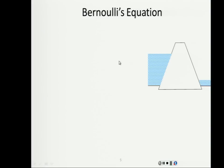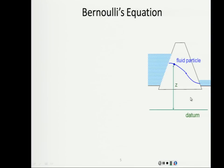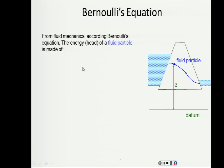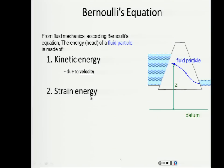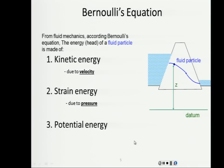The movement of fluid through soil is described by Bernoulli's equation, which defines how a fluid particle moves from higher to lower potential energy. The Bernoulli equation has three parts: kinetic energy due to velocity, strain energy due to pore pressure, and potential energy depending on the height of the point being studied relative to a selected datum.